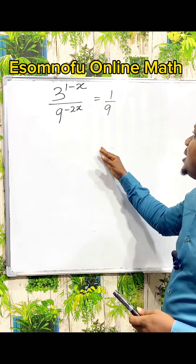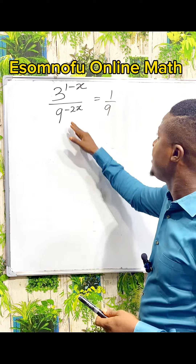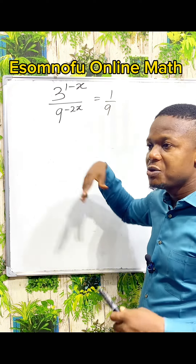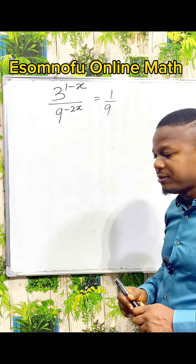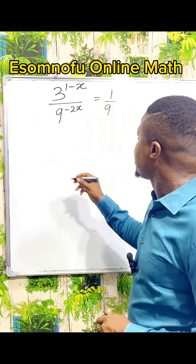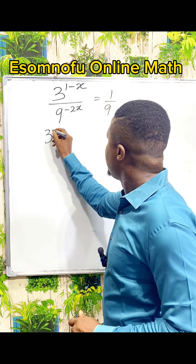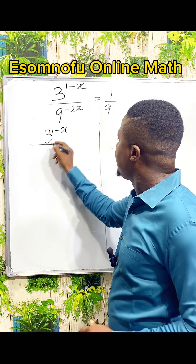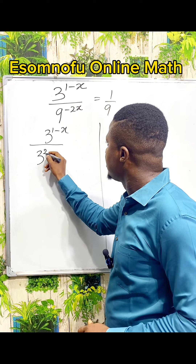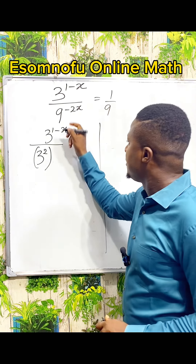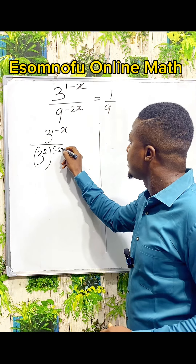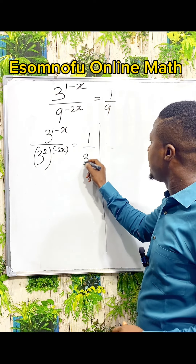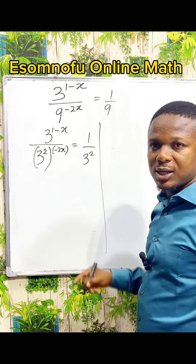So to solve this, ensure that their bases are the same thing. 9, 9 and 3 — so 3 is a common factor of all of them. Let us write all of them in a base of 3. Good enough, the numerator is already in a base of 3. The denominator can be seen as 3 power 2. Then we have power of minus 2x. 1 over 9 is 3 power 2, and 3 power 2 is 9.